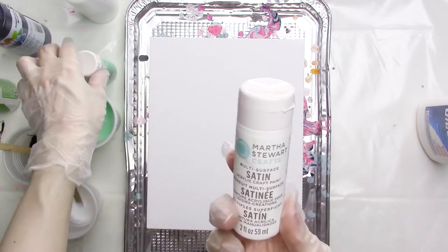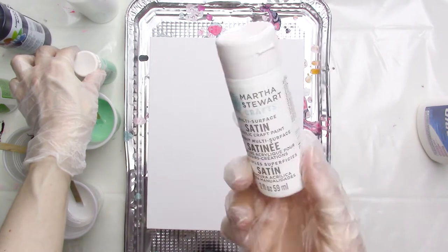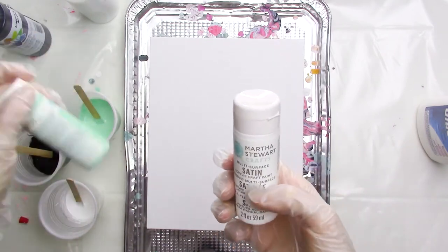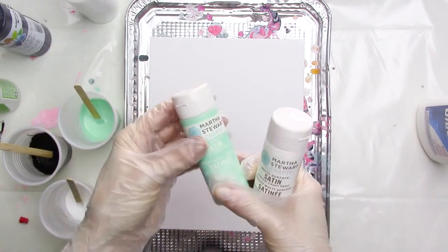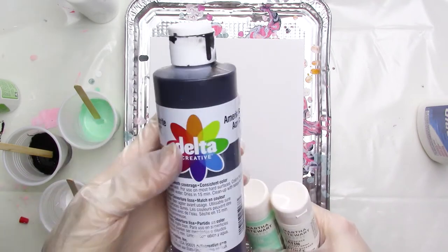For the paint colors today, I'm using Martha Stewart Wedding Cake Satin Craft Paint for the white, Martha Stewart Beach Glass for the sea foamy blue-green color, and Ceram Coat black paint.